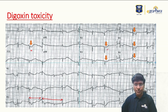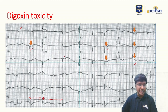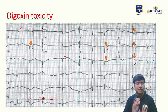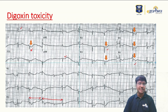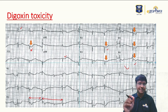You can see ST segment depression all the way from V2 to V6 — that is V2, V3, V4, V5, V6 — and also in leads I, II, and aVF. ST segment depression is present in more or less all leads. You should observe the shape of that ST segment depression carefully.